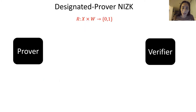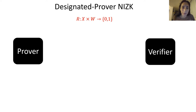Let me first describe the model we're working on. We have two parties, a prover and a verifier, and there is some NP relation R, and we want to have a non-interactive zero knowledge protocol with respect to this relation.